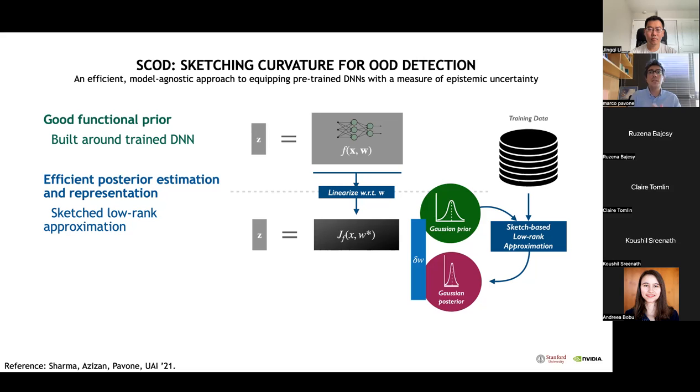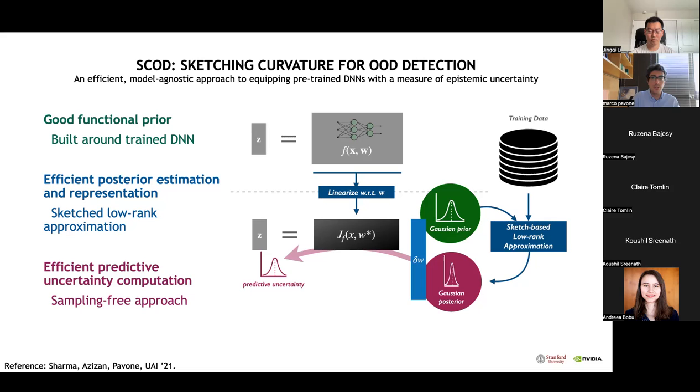The key insight we leverage in SCOD is that for over-parameterized deep neural networks, this Hessian exhibits rapid spectral decay. Thus we can achieve substantial efficiency gains by working with low rank approximation. Specifically, we use a sketching-based methodology to represent this posterior covariance in terms of low rank factors. We can obtain low latency uncertainty predictions by analytically propagating the posterior Gaussian in the weights to the output of the linearized model. Finally, we compute a scalar measure of uncertainty at runtime by evaluating the entropy of this distribution.